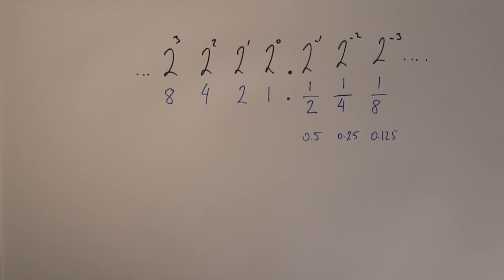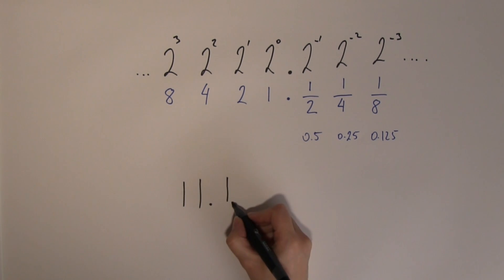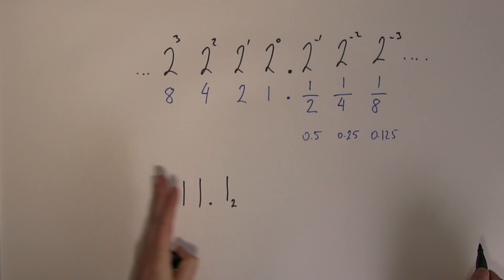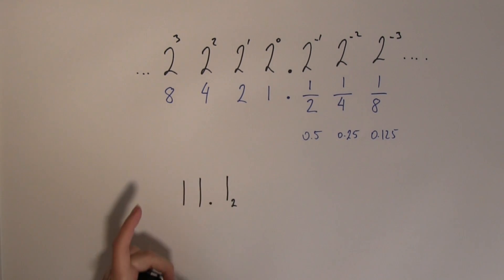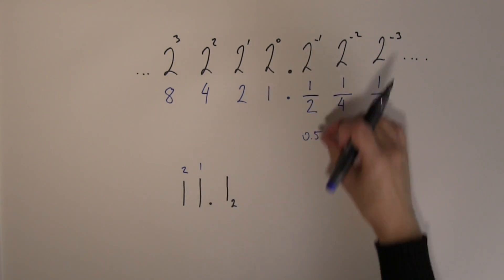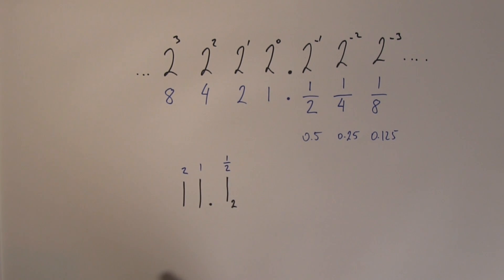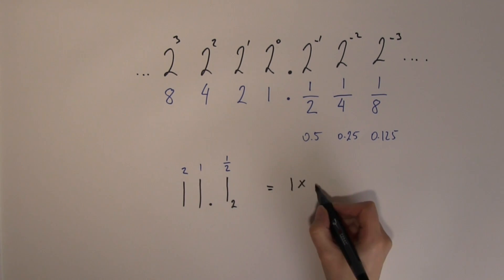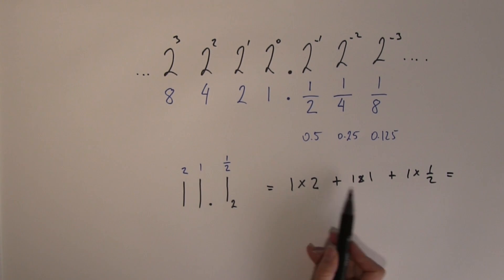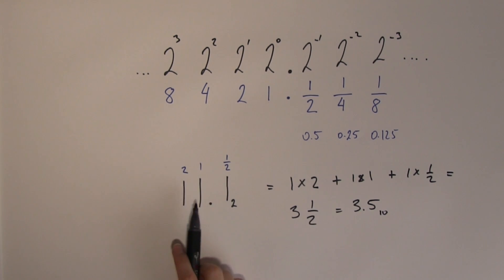Let's look at a binary fraction example. Take 11 radix point 1 in binary. Anything to the left of the radix point works like ordinary binary: place values are 1 and 2. The digit to the right has place value one half. So we have one times 2, plus one times 1, plus one times a half, giving 2 plus 1 plus 0.5, which equals 3.5.